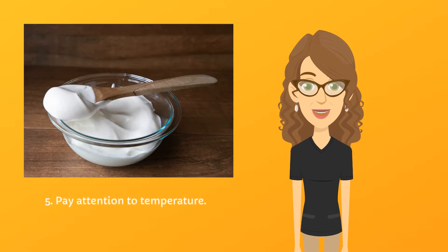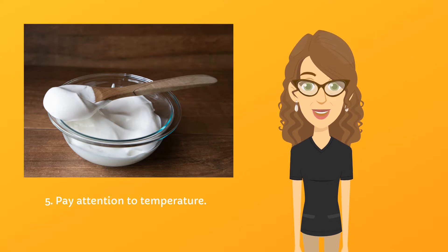Pay attention to temperature. Room temperature egg whites whip up more quickly. However, cold eggs are easier to separate. This means it's best to separate eggs straight from the fridge, then let them sit at room temperature for 30 to 45 minutes.